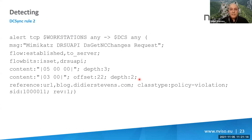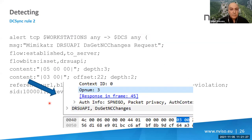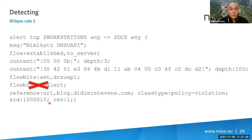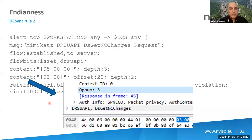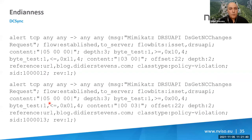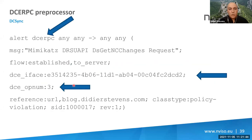Question: does the Suricata DCE RPC preprocessor rule using 'alert dcerpc any any -> any any' create false positives? Yes, of course — it will also trigger on legitimate traffic between domain controllers. That rule is just an example. You need to tailor it to your environment, scoping from member servers and workstations to domain controllers, just as with the first TCP rule.